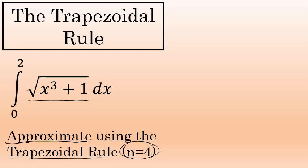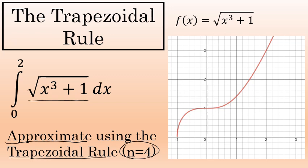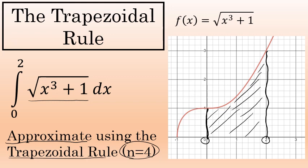The trapezoidal rule is based on finding the area of trapezoids to approximate the area between the curve and the x-axis. When I say the curve, I mean the graph of f of x equals the square root of x to the third plus 1. We're integrating from x equals 0 to x equals 2, so the exact value of this definite integral would be the exact area between the curve and the x-axis from x equals 0 to x equals 2. Finding that exact value is very difficult, but by finding the area of trapezoids that represent the shaded region, you can get a pretty good approximation.